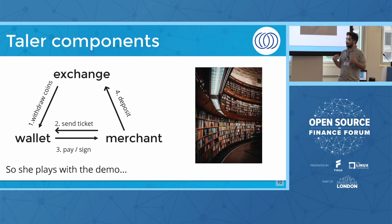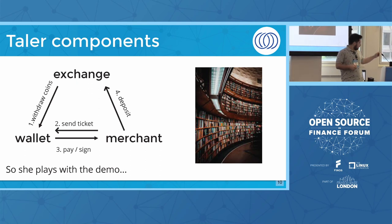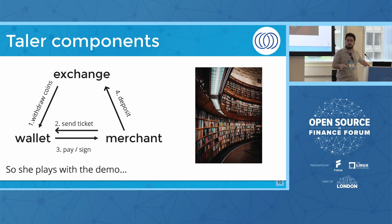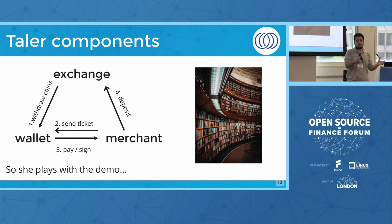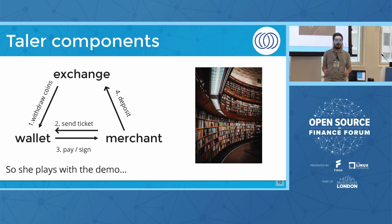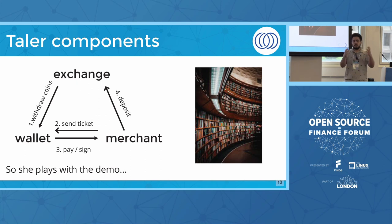The merchant needs to tell the exchange how much money it is getting — this is really important for taxation. Thaler is the whole system and protocol that connects all the components. What we are building is the protocol so every individual component can be created by different participants. You can build a wallet that follows this protocol and talk with different exchanges and different merchants. We have a software reference, but someone else can build another wallet and use it with everything else.